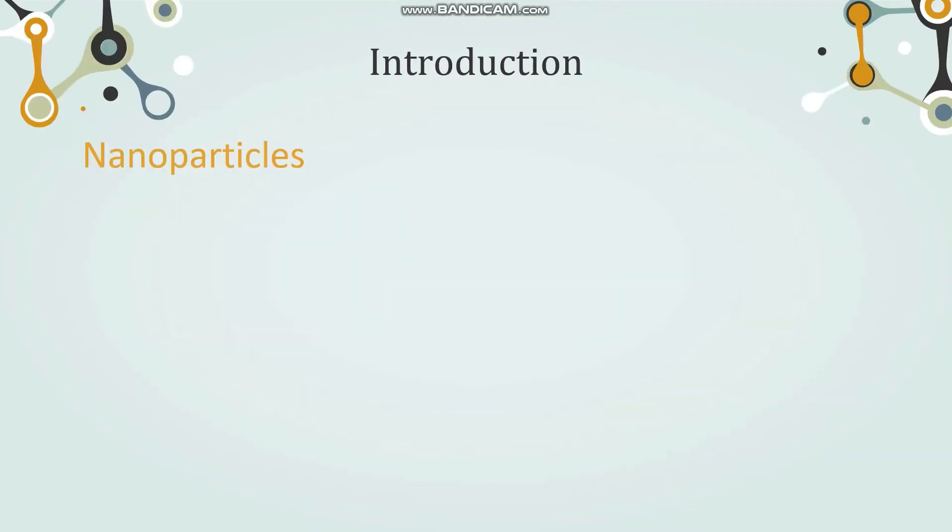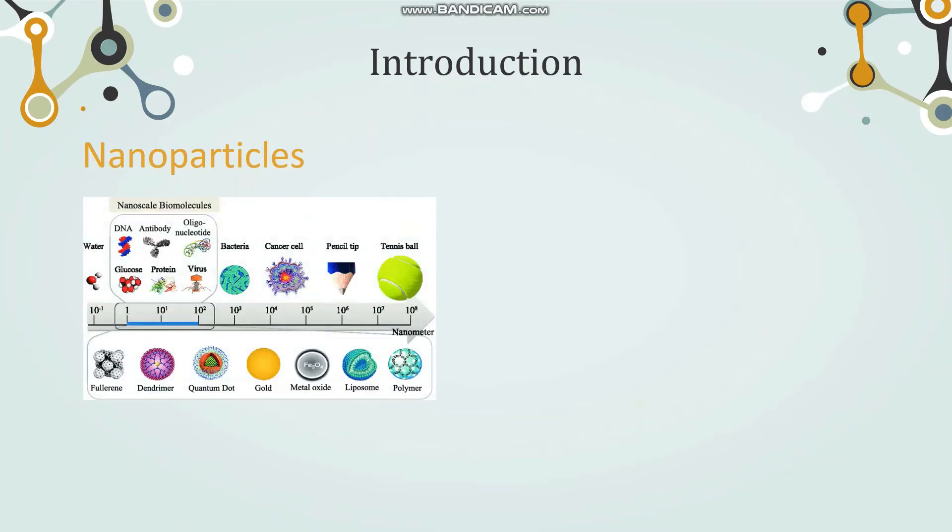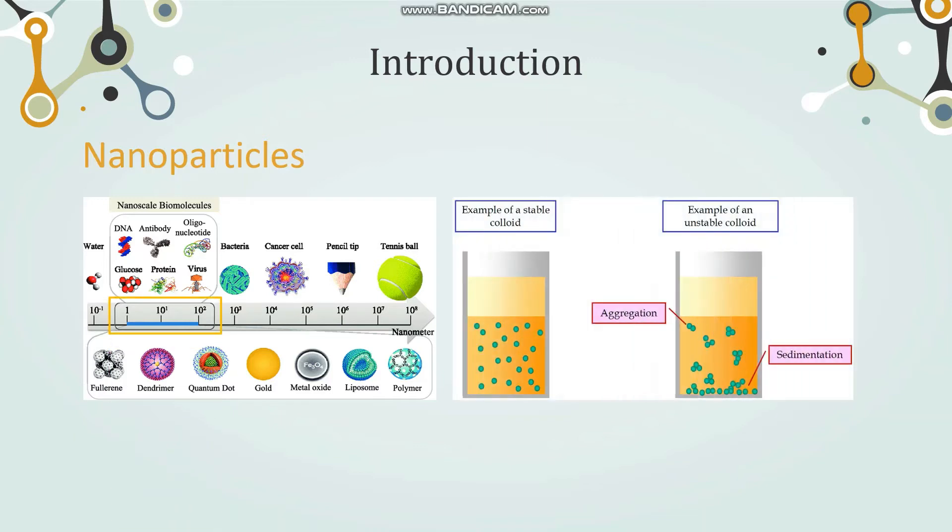But what exactly is a nanoparticle? They are essentially stable particles that fit into the nanoscale, that is between 1 and 100 nanometers. Why must they be stable? This is because of their tendency to aggregate and settle. When that happens, this aggregation forms clusters that are usually bigger than the nanoscale.